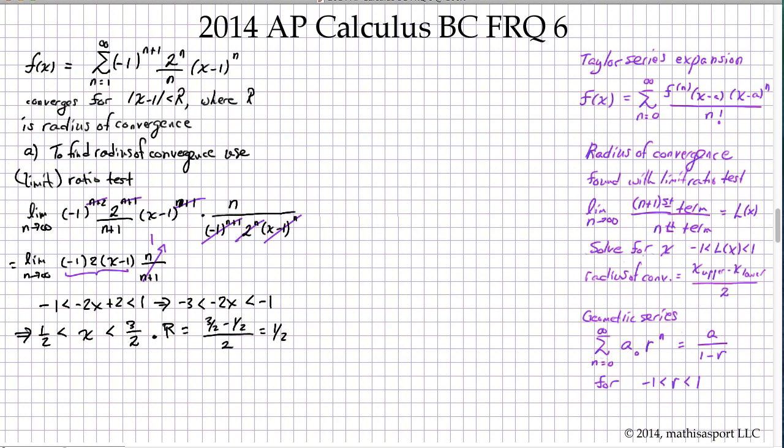Now we move on to Part B. We're going to be finding f prime. The Taylor series they've given us is f, and we want to find f prime, also about x equals 1 — that's the only place where we could find it in a term-by-term sense. So we're going to simply differentiate term-by-term. We'll do that for the first three non-zero terms and then for the general term. The first thing we'll do is write out the first three or four non-zero terms of f and then differentiate them term-by-term.